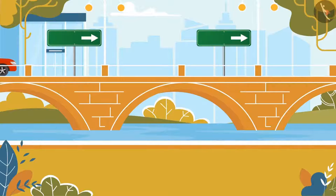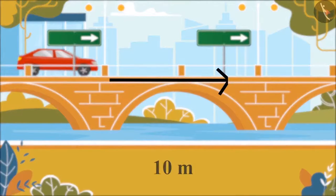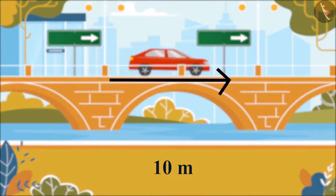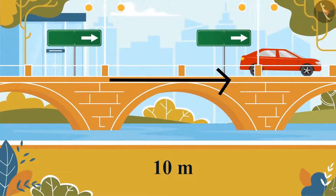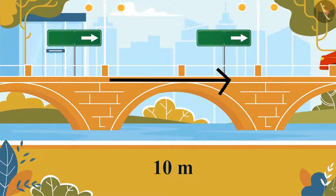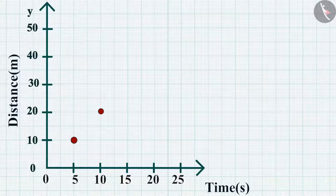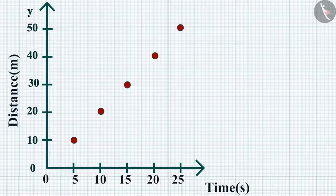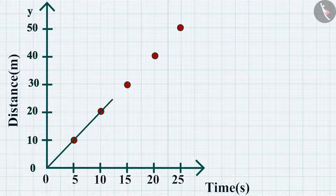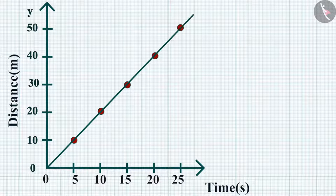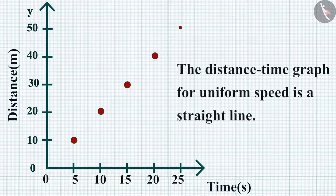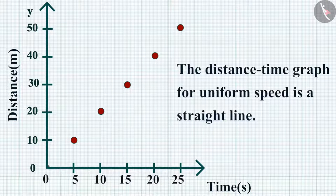Suppose the object covers 10 meters in the first 5 seconds. For the next 5 seconds, it covers another 10 meters, and so on. Mark the points on the graph. If you join these points, you can see a straight line passing from the origin. Thus, for uniform speed, a graph of distance travelled against time is a straight line.